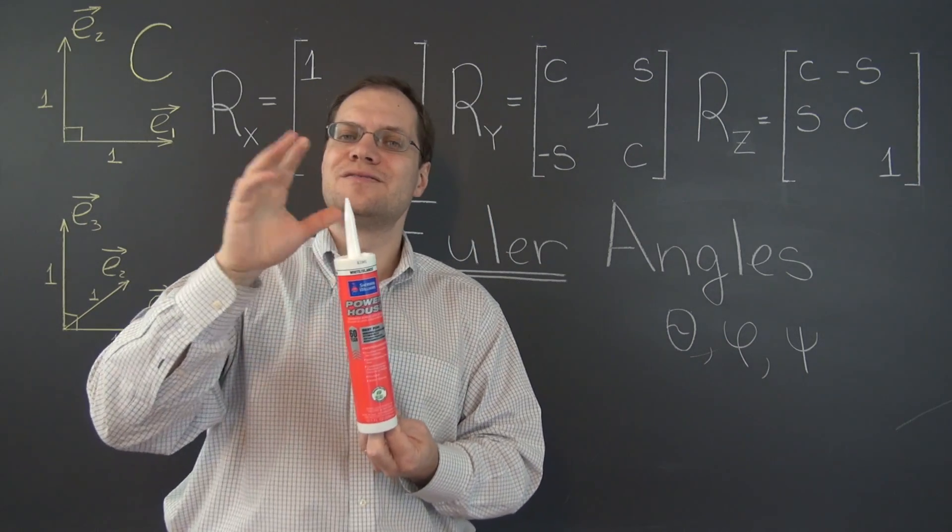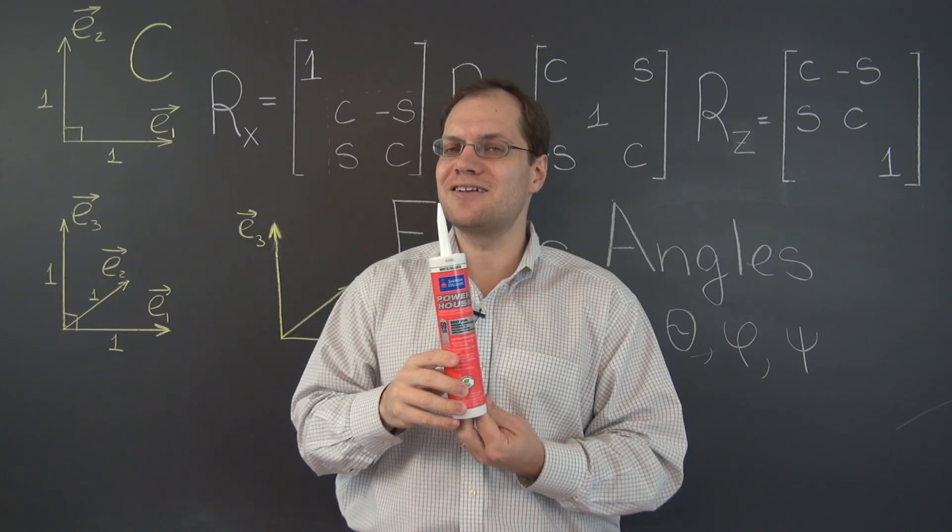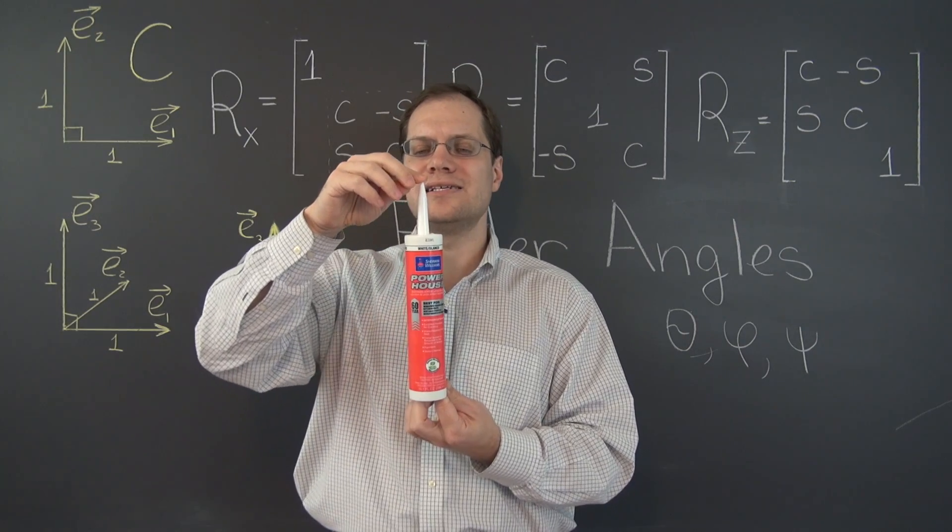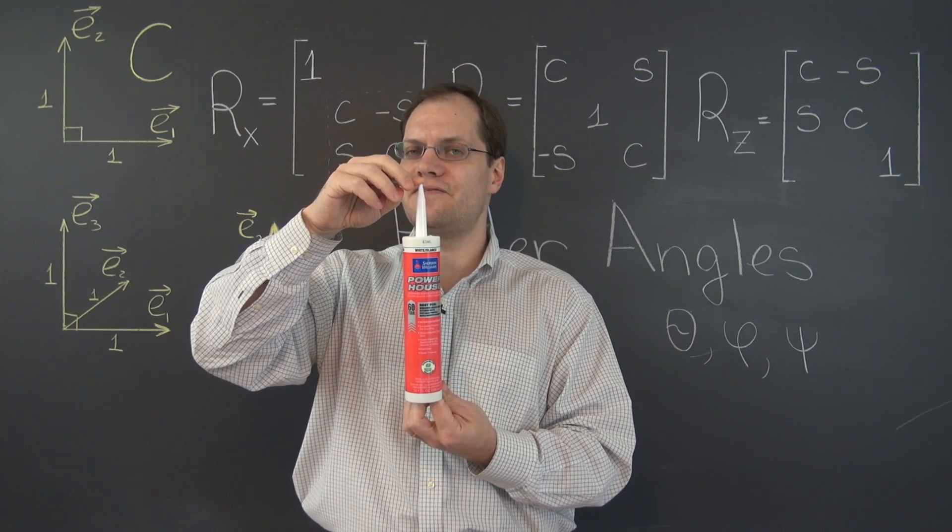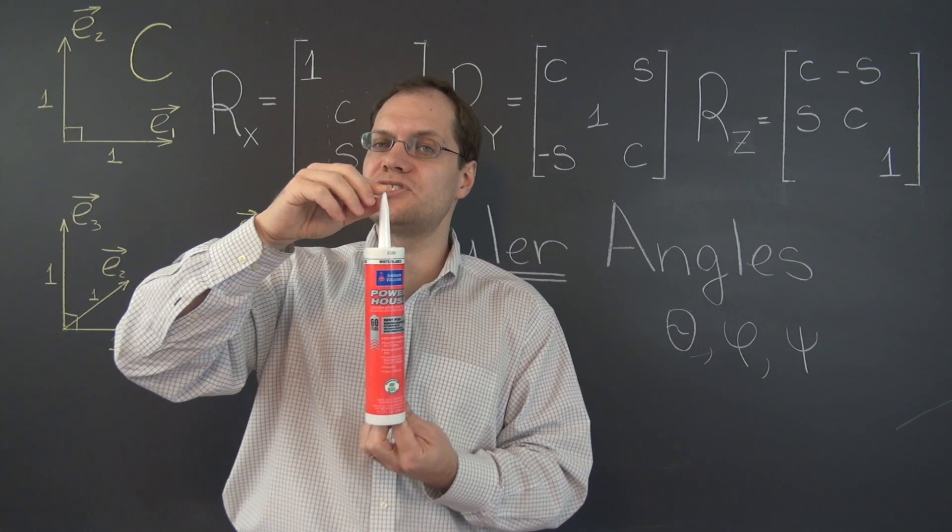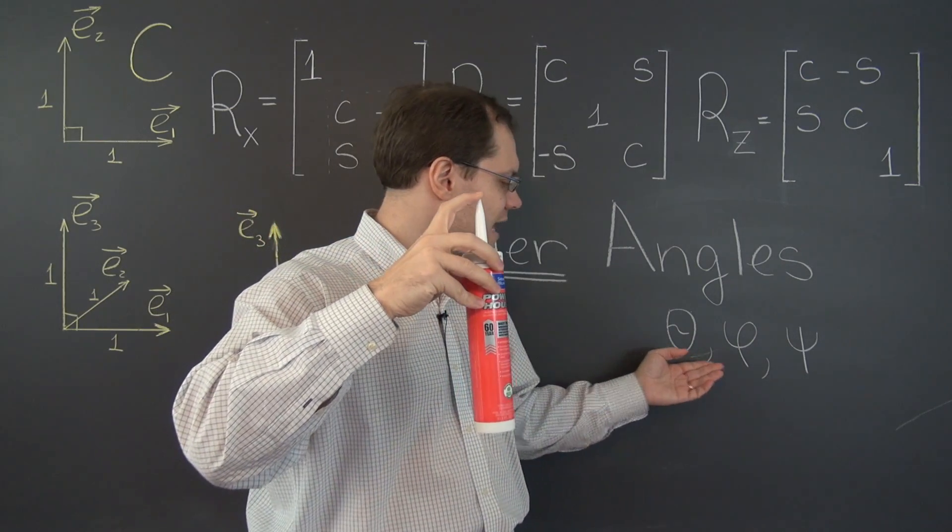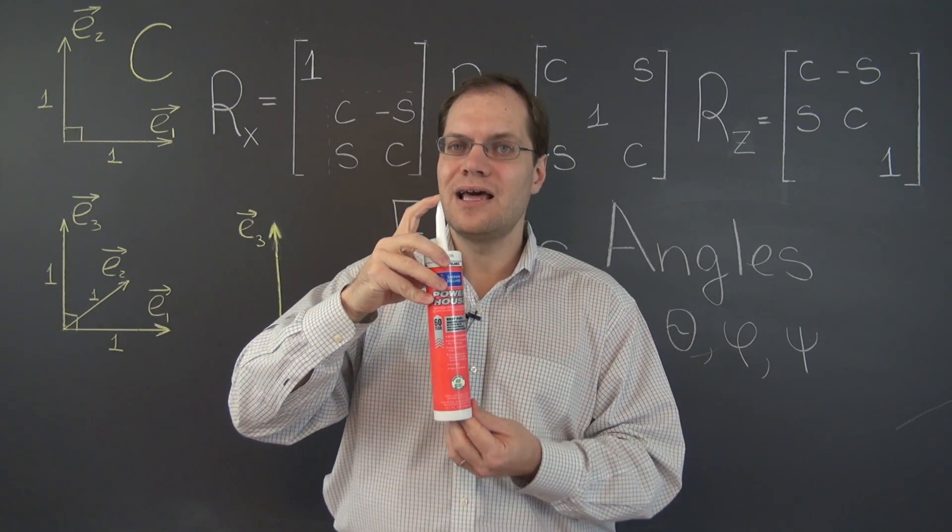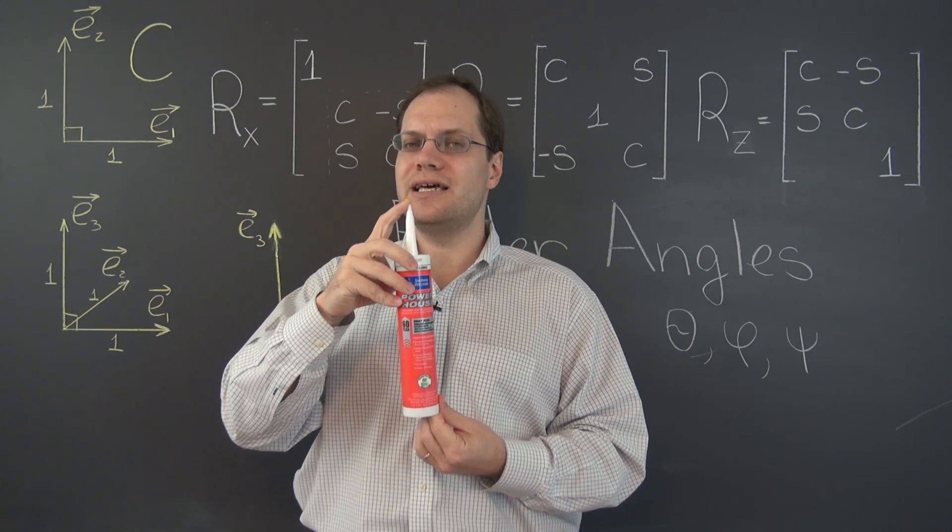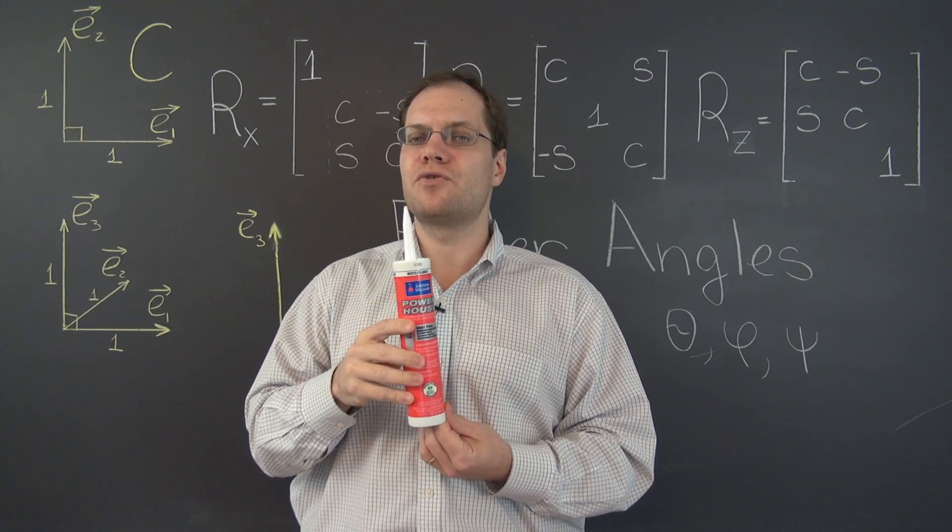So here come some subtleties. Here is subtlety number one. When you talk about specifying theta and phi, the direction in which the body points, in other words, latitude and longitude, it's important how you get there. It's important for the twist.